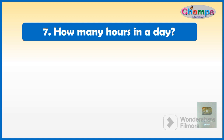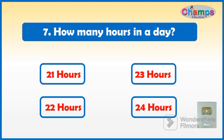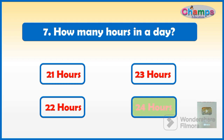How many hours are in a day? Options: 21 hours, 23 hours, 22 hours, or 24 hours. And your time starts now. The correct option is 24 hours.